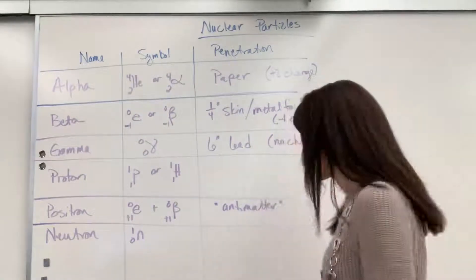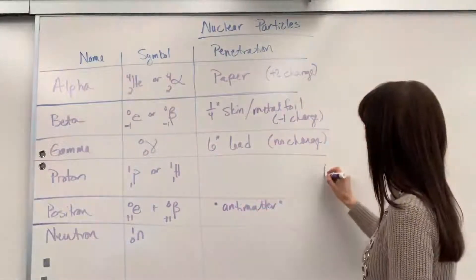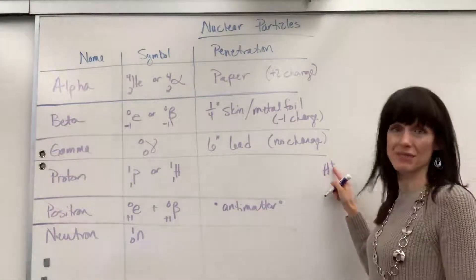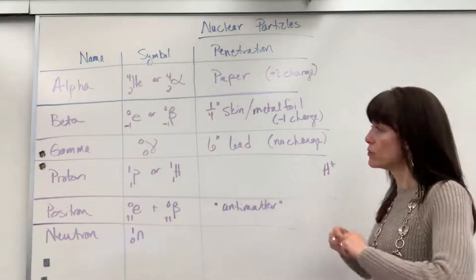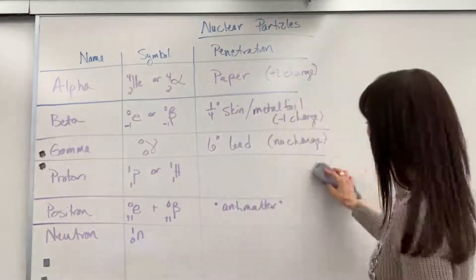Now if we were doing like acid-base chemistry, the way you and I have been used to writing with traditional chemistry a proton is with that positive, meaning that it lost the electron. But in nuclear chemistry you can just do the hydrogen with the one and the one and it's understood to be the proton.